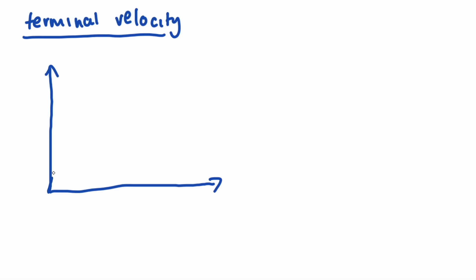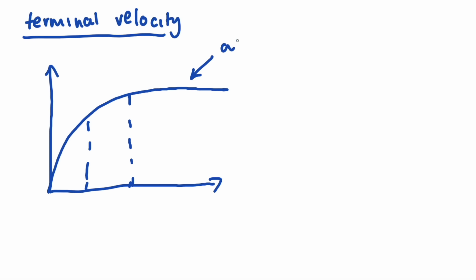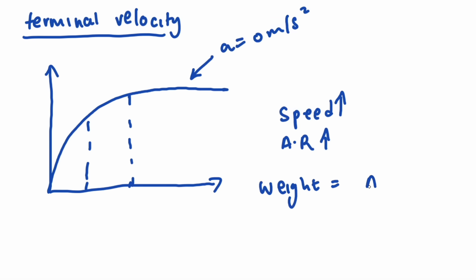Let's have a look at terminal velocity. The terminal velocity graph shows that at first the speed increases and air resistance increases, and at terminal velocity the weight equals the air resistance.